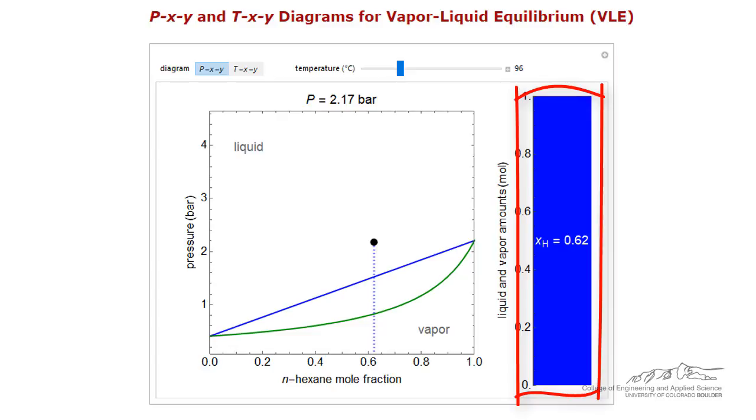A bar chart on the right of the plot indicates the amount of liquid, blue, and vapor, green. At the initial conditions, the mixture is all liquid, and therefore the bar chart is completely blue.